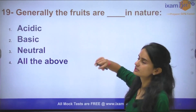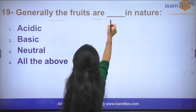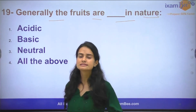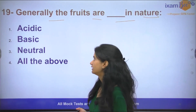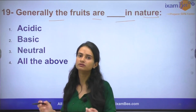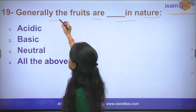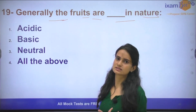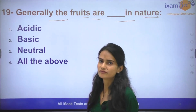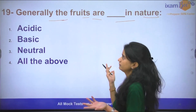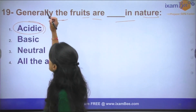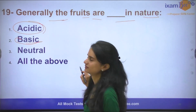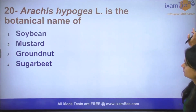Question number 19: Generally, fruits are what in nature — acidic, basic, or neutral? We know that fruits contain malic acid, tartaric acid, and citric acid, which tells us that fruits are generally acidic in nature. Whereas vegetables are mostly basic in nature.